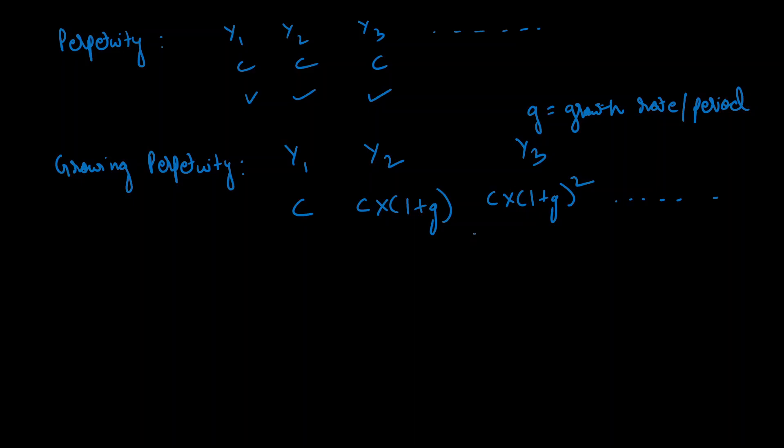Let us now write down its present value. For year one we are going to get c divided by (1 + r), which is the discount rate raised to the power of the number of periods. For year two we are going to get c times (1 + g) divided by (1 + r) squared. Similarly, for year three we'll have c times (1 + g) whole squared divided by (1 + r) cubed, and this will keep going up.